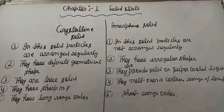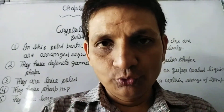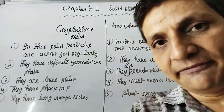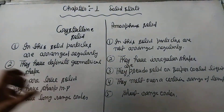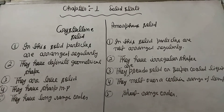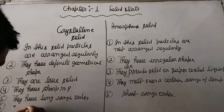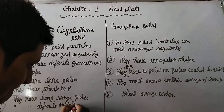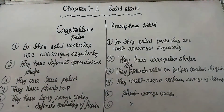Now students, I am telling you some other properties. Cleavage property: when amorphous solids are cut with a sharp-edged tool like a knife, they cut into irregular shapes. After this, crystalline solids have a definite enthalpy of fusion, whereas amorphous solids do not have a definite enthalpy of fusion.